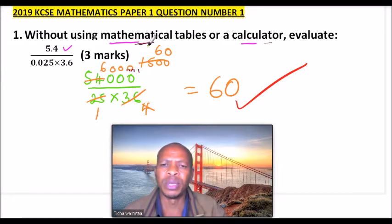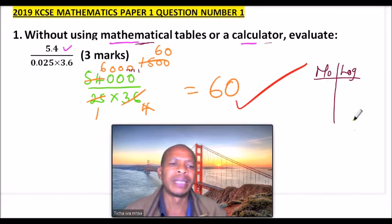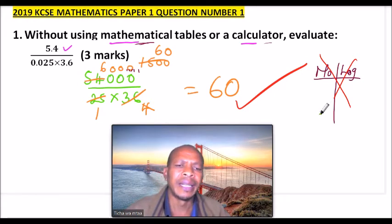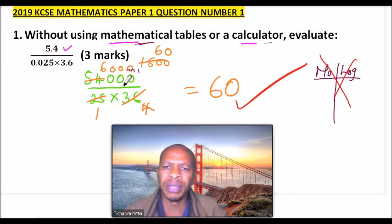For example, if you are to use mathematical tables then you need to draw this kind of table, the one that you use to solve such problems. The examiner will know that you have used a mathematical table which you are told not to use. If you use a calculator then it will give you the direct answer, that is 60.